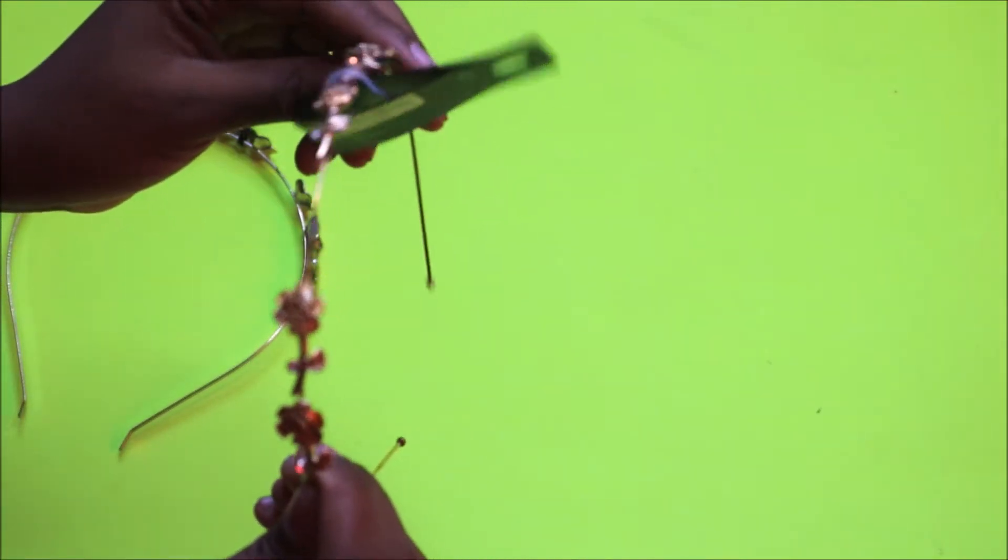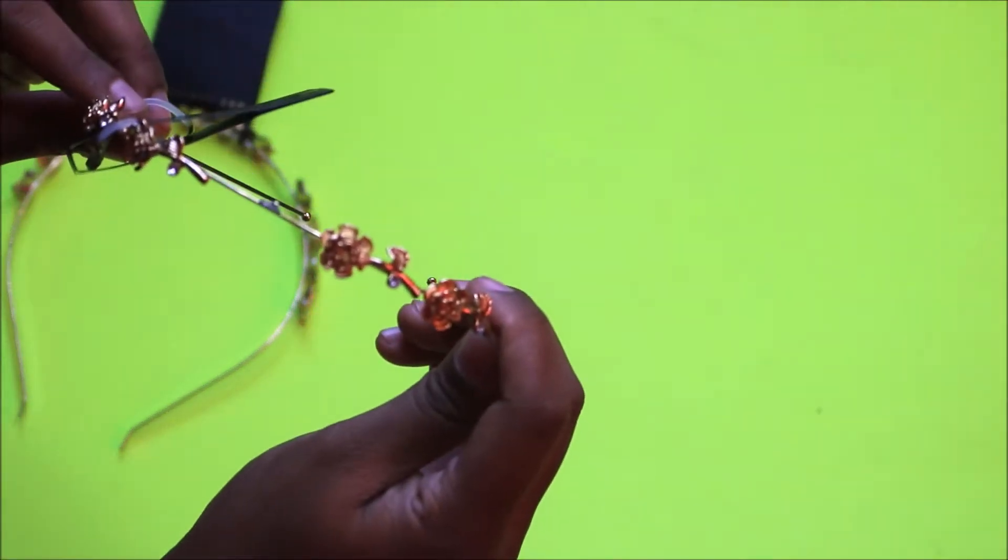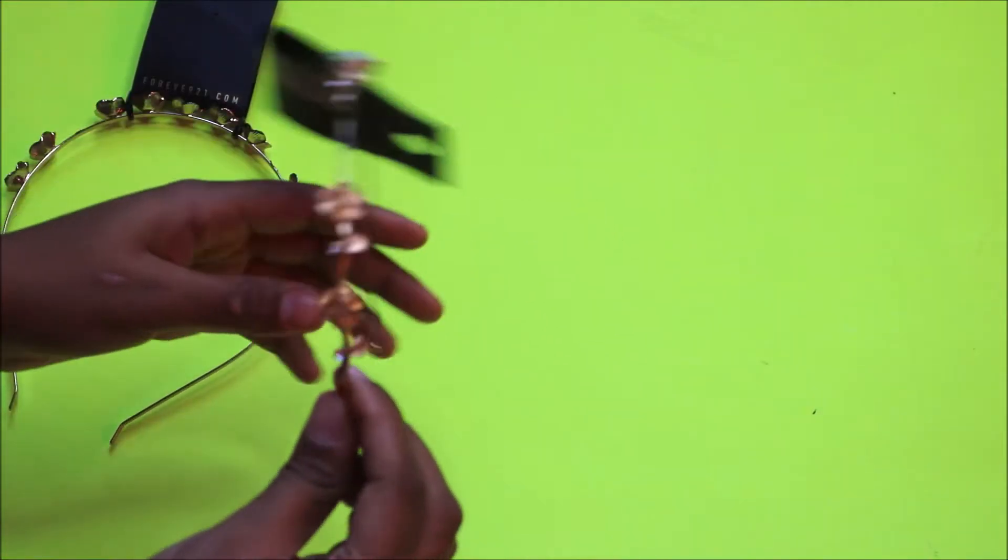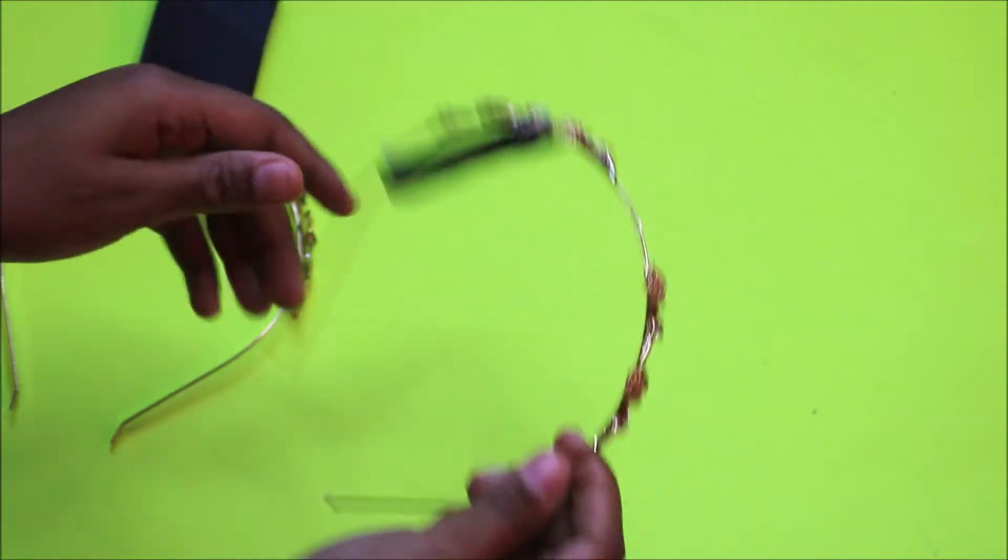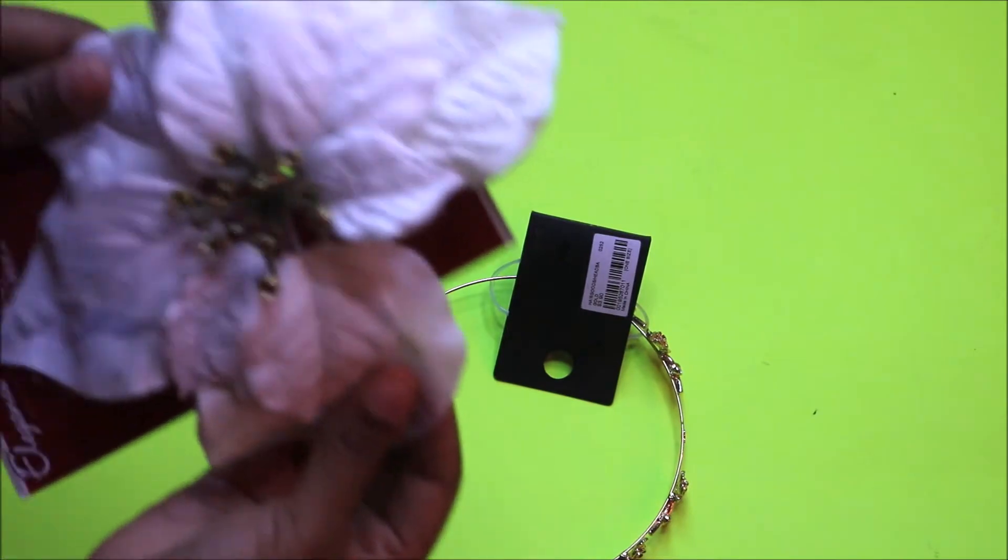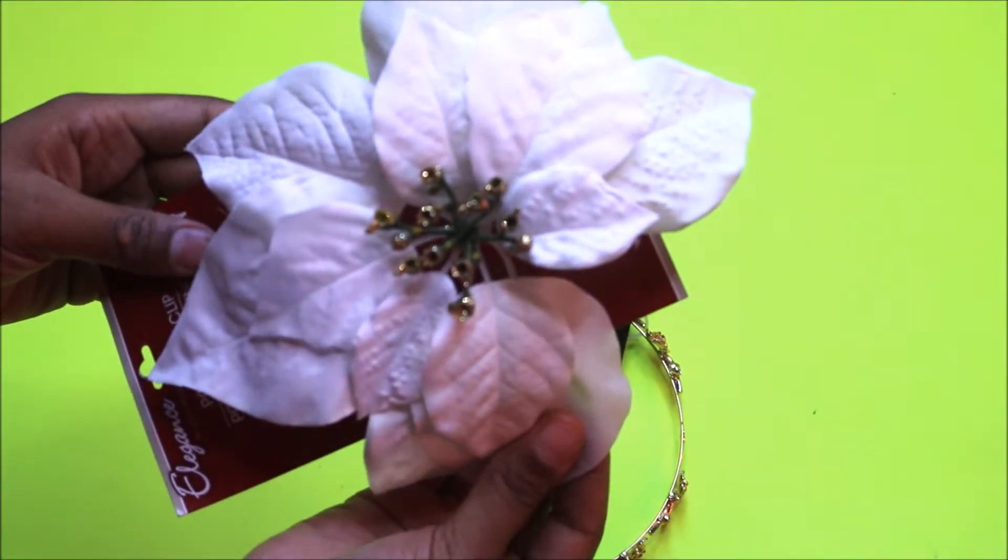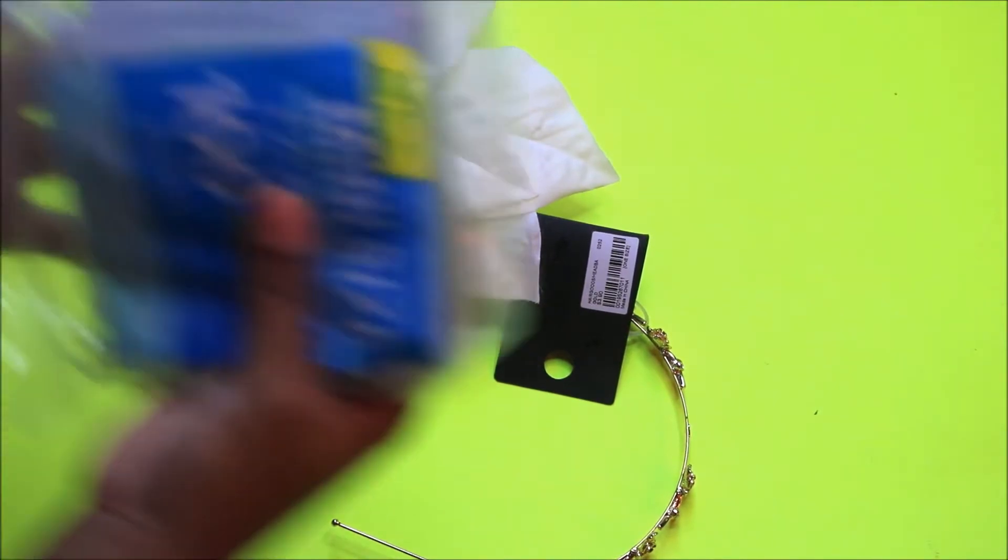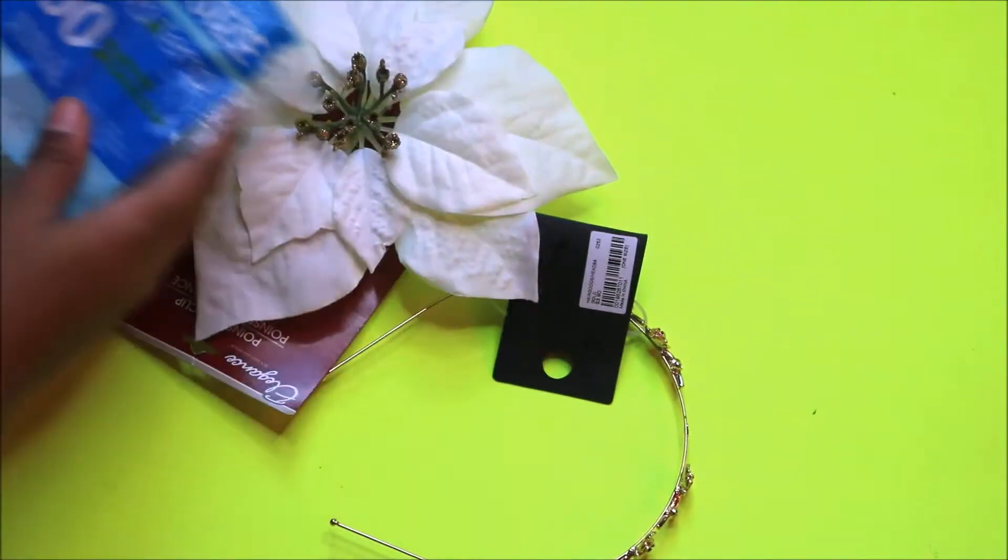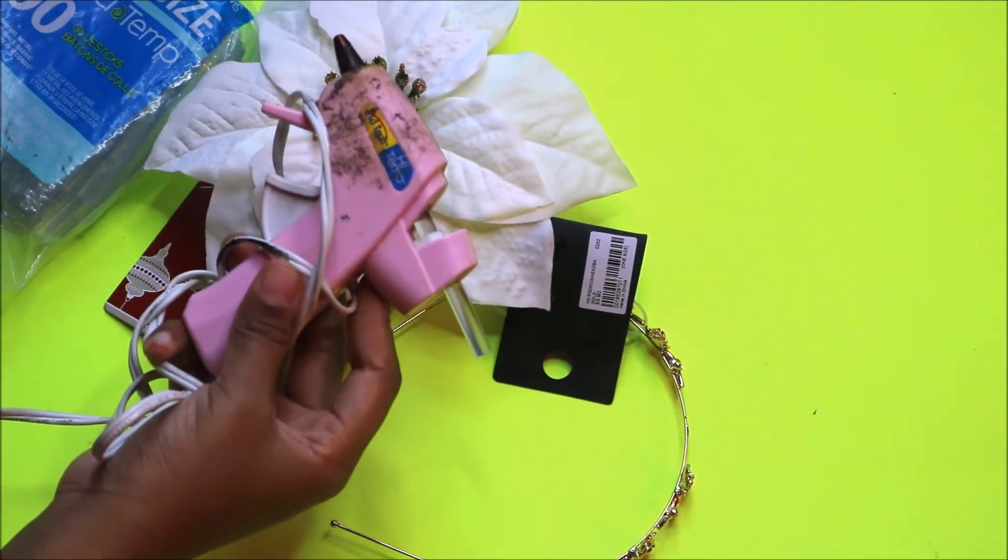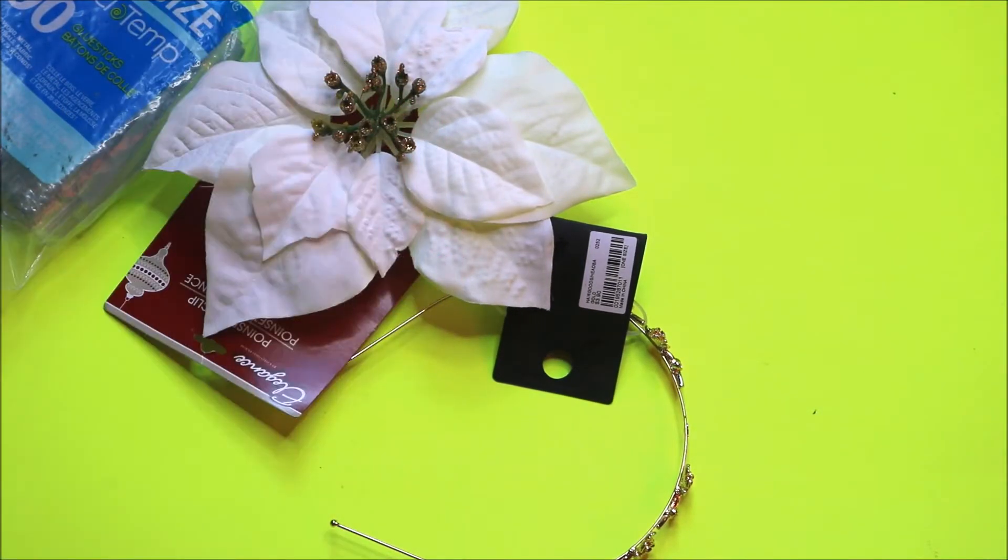I started by picking the crown that I would like to use and next you'll just need a flower with white or tan petals, some glue sticks, and also a glue gun.